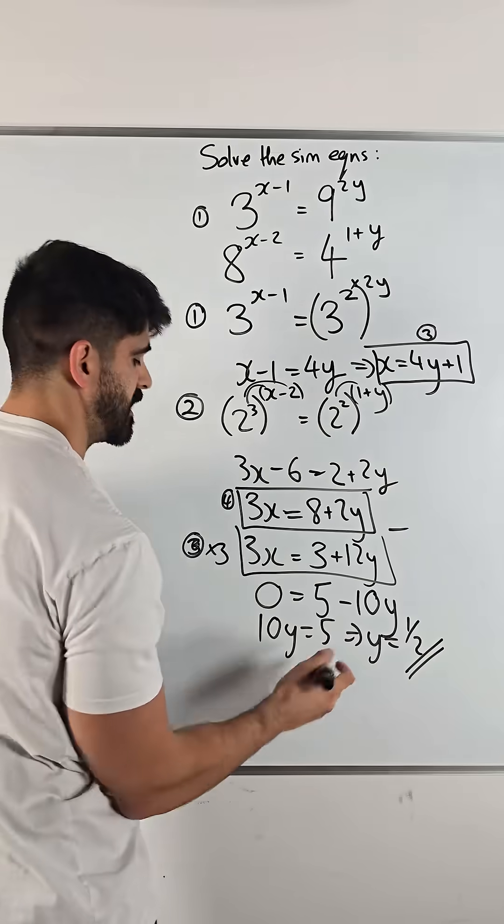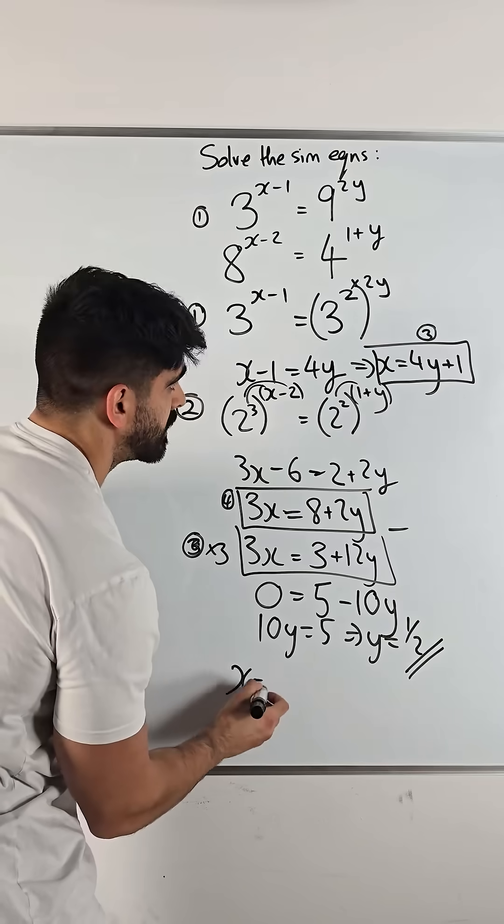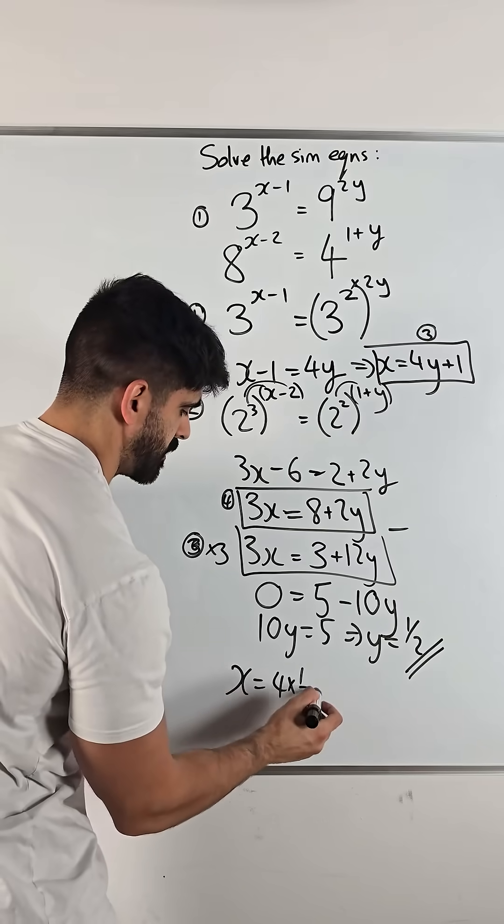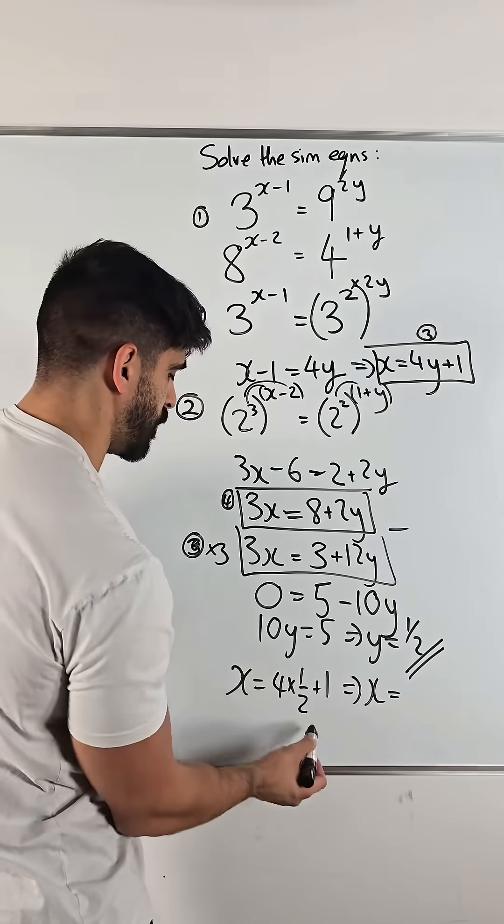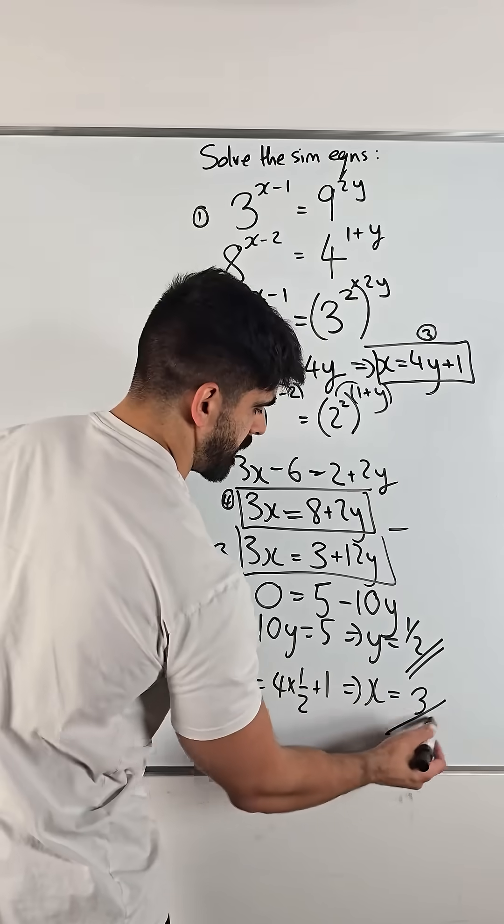Subbing into any of them, I think this one's the easier one. x is 4y, 4 lots of a half, plus 1. x is a half of 4 is 2. 2 plus 1, 3. And those are your solutions.